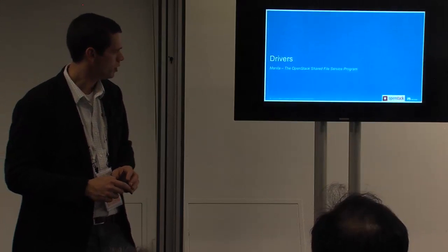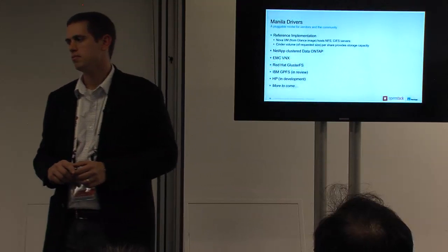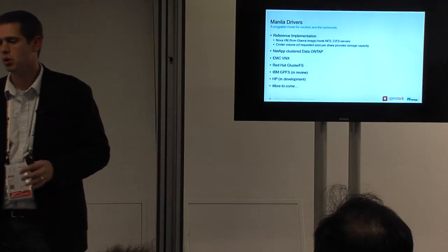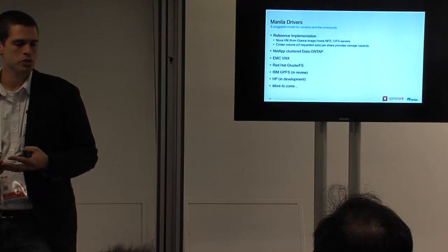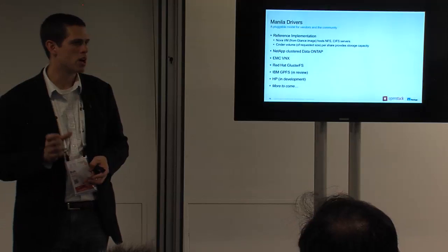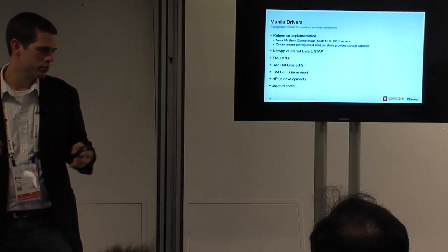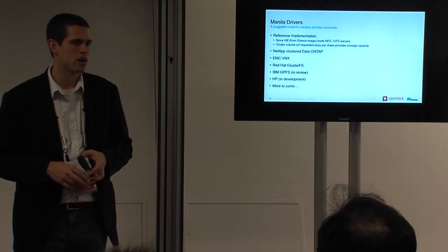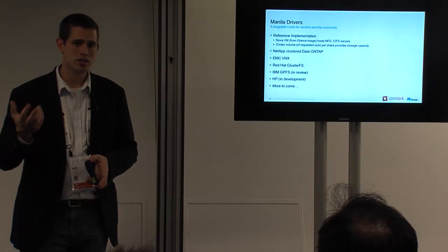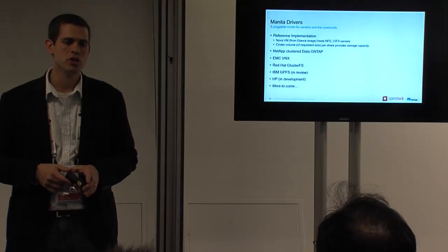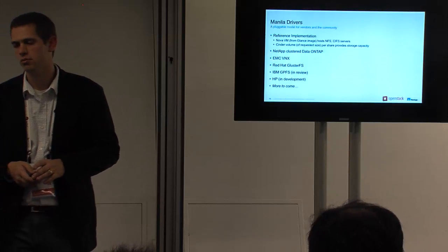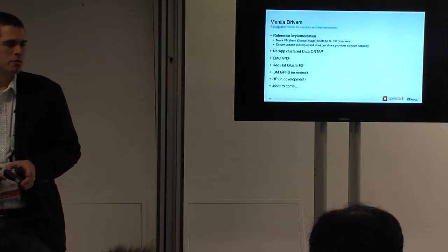I do want to talk about some of the drivers we have available. Just like most other OpenStack projects, we have a reference implementation built completely on open source software. What it actually does to supply shares is it will spin up a Nova instance under a private service tenant that hosts — by default — a stock Ubuntu image with an NFS server and a Samba server installed. When we get an API request to create a five-gig CIFS share, we'll create a five-gig Cinder volume, attach it to that Nova service instance, lay down a file system, and export that through Samba. While we don't envision a lot of people using that in production, it's a way to get started with the service and understand the implications.